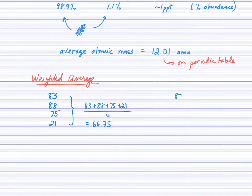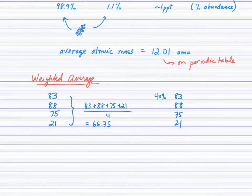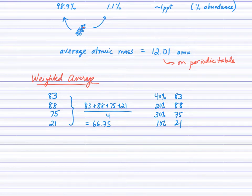Now let's take those same marks — 83, 88, 75, and 21 — but this time assign different weights. The 83 is worth 40%, the 88 is worth 20%, the 75 is worth 30%, and the 21 is worth 10%. Instead of being equally weighted, that 83 is going to be worth the most, and thankfully that 21 is going to be worth the least. Pause the video and see if you can come up with a way to calculate the weighted average of these values.